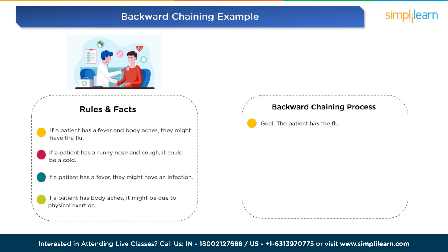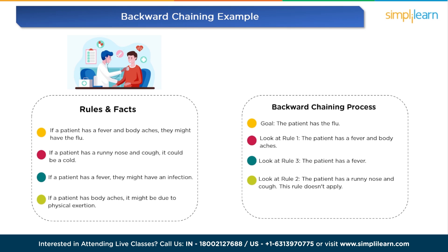So how does the backward chaining process work? Look at Rule 1: the patient has a fever and body aches. At Rule 3: the patient has a fever. Look at Rule 2: the patient has a runny nose and cough — this rule doesn't apply. Look at Rule 4: the patient has body aches. Based on the backward chaining process, the evidence suggests the patient might have the flu because of a fever and body aches. This is the chain of reasoning that leads to the conclusion. In essence, backward chaining starts with the desired outcome and traces the path backward through rules and facts to find supporting evidence. It's commonly used in diagnostic systems, troubleshooting, and other scenarios where the goal is to determine the causes or conditions that lead to a specific result.